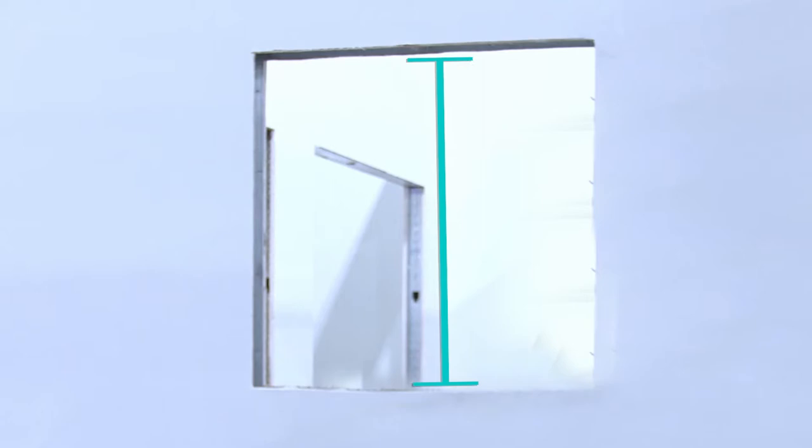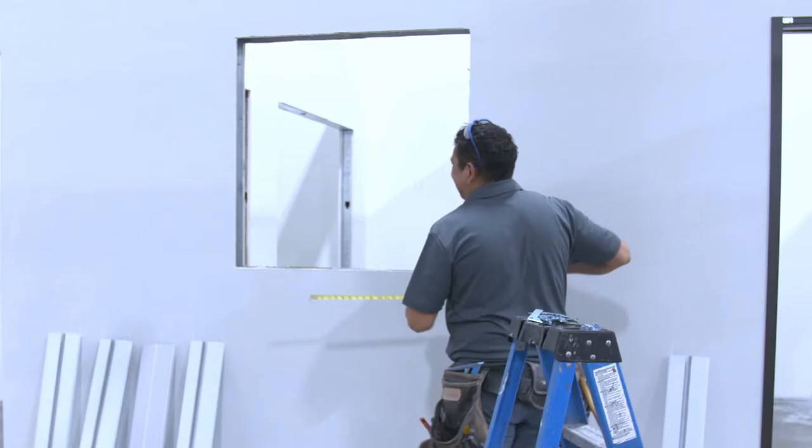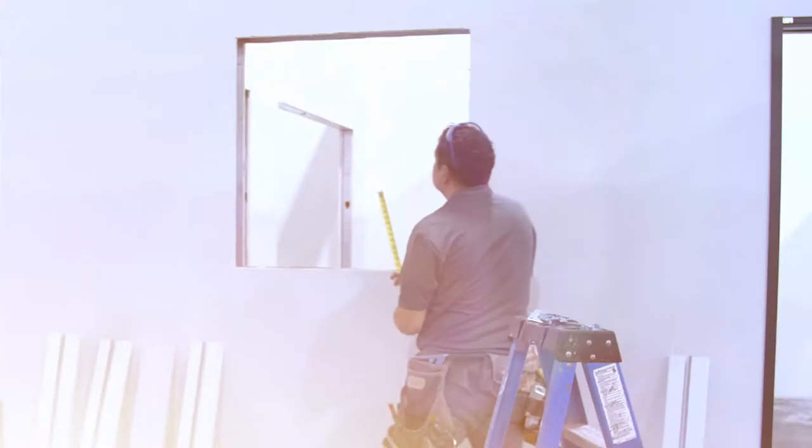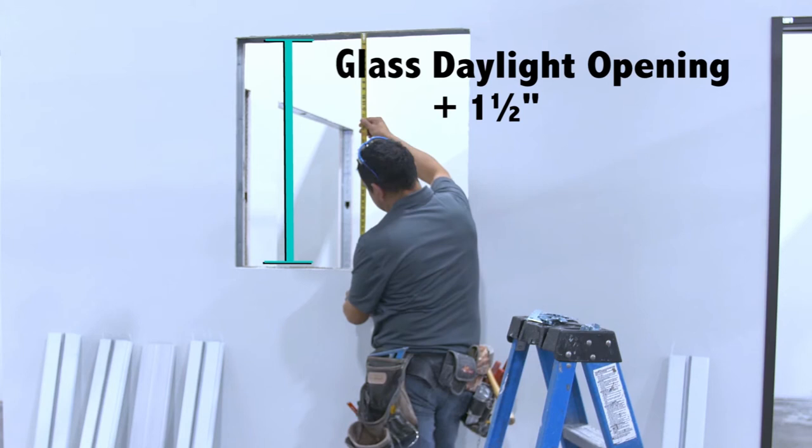Check the dimensions and square of the rough opening. The rough opening width should be daylight opening plus 1.5 inches. The rough opening height should be the daylight opening plus 1.5 inches.